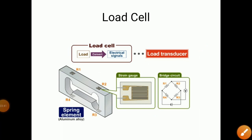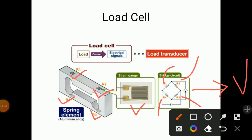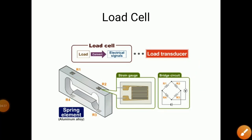This is the diagram of load cell. Load is converted into electrical signals — that is a load transducer. Load cell consists of strain gauges. In this diagram, four strain gauges are connected: R1, R2, R3, and R4. All four strain gauges are connected as resistances in the Wheatstone type bridge circuit, and the voltage produced is measured. So in the load cell, strain gauges are used, and force applied is converted into electrical signals.